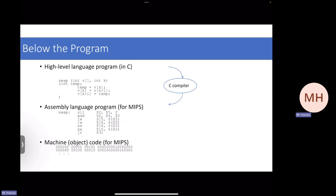If you think about that program — it's an array, so I'm getting elements from memory. That's why I have two loads, and they are offset by four bytes because this is an int array, and int elements are four bytes. So I load the two elements one after the other, then do two stores — because after loading, I do the swap and store them back. There is also an addition instruction because I'm using the pointer and pointer plus one.